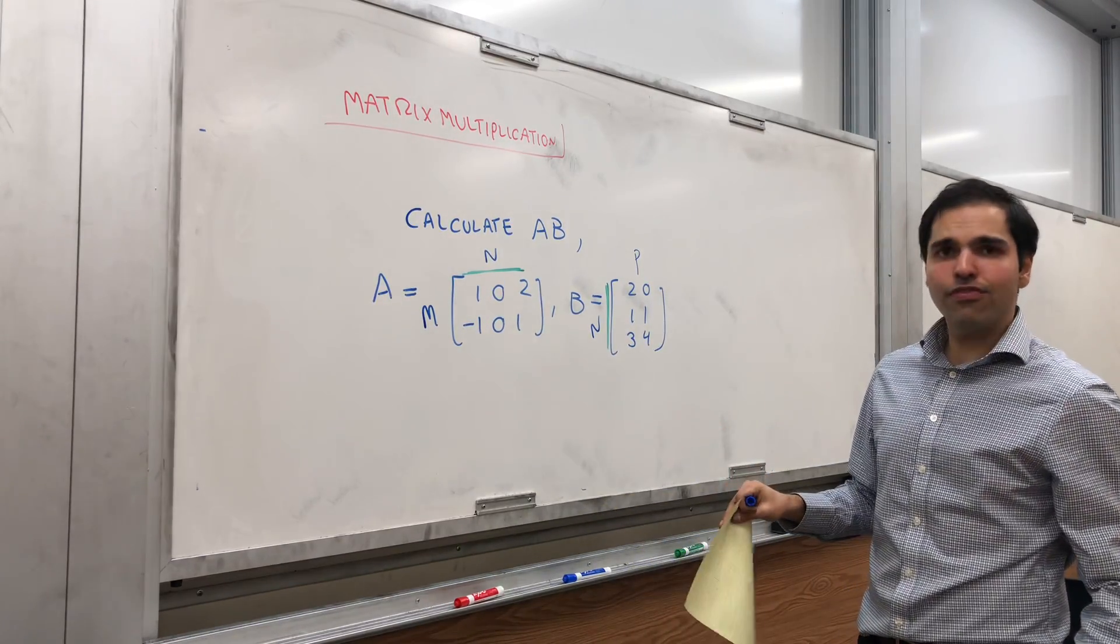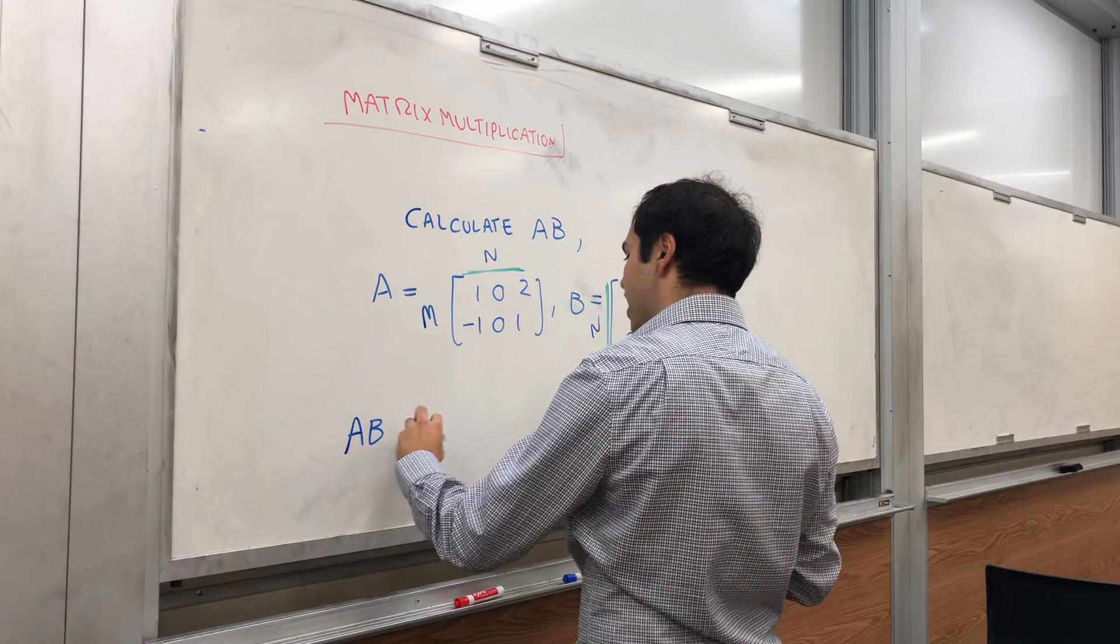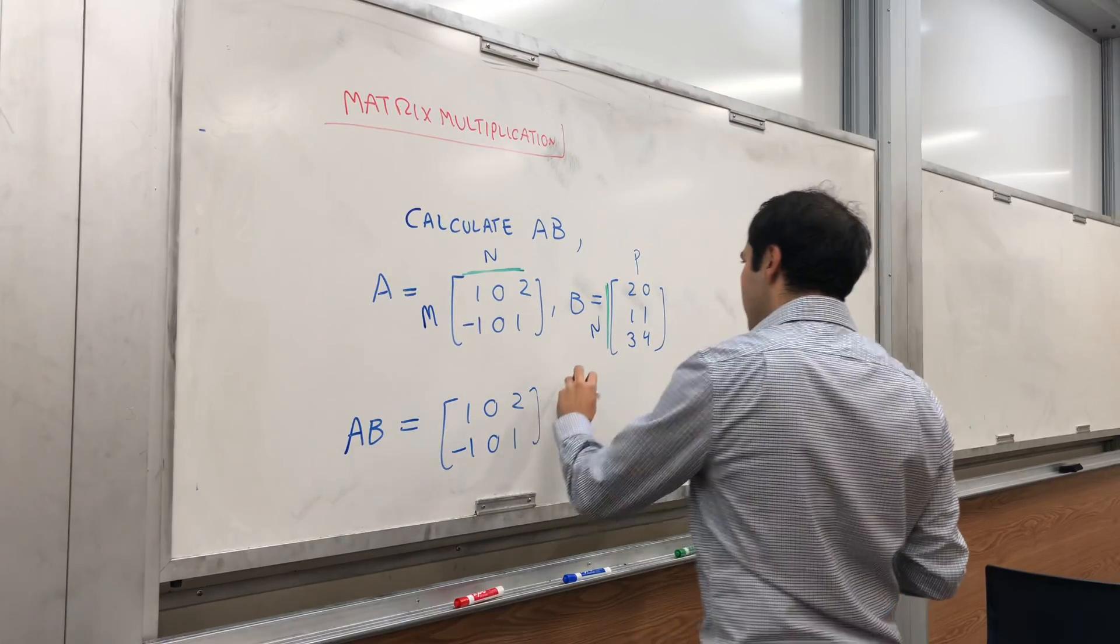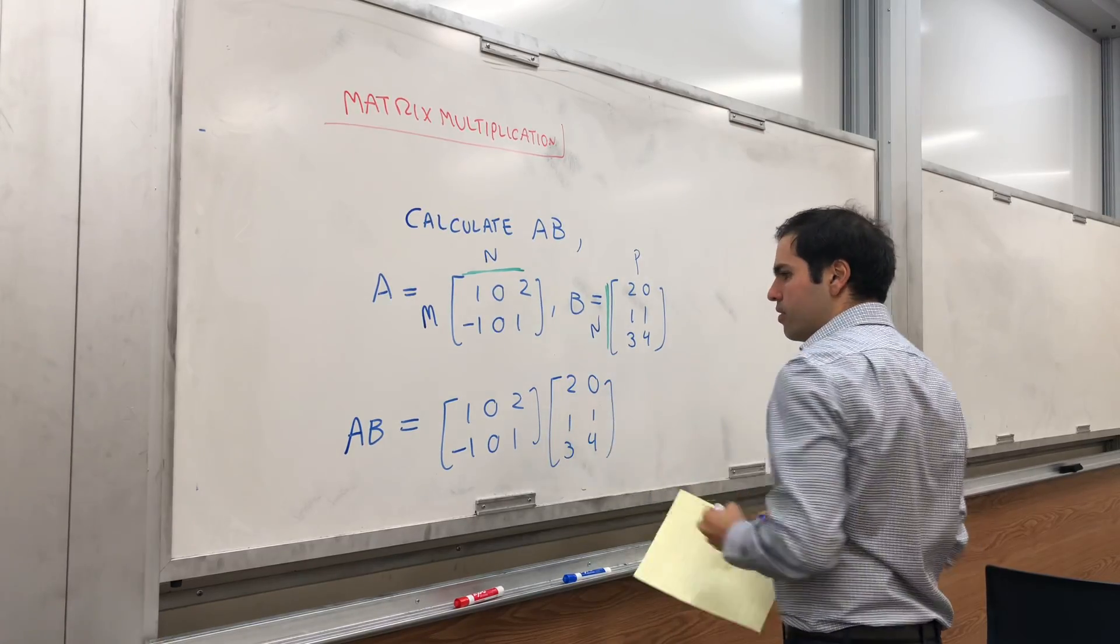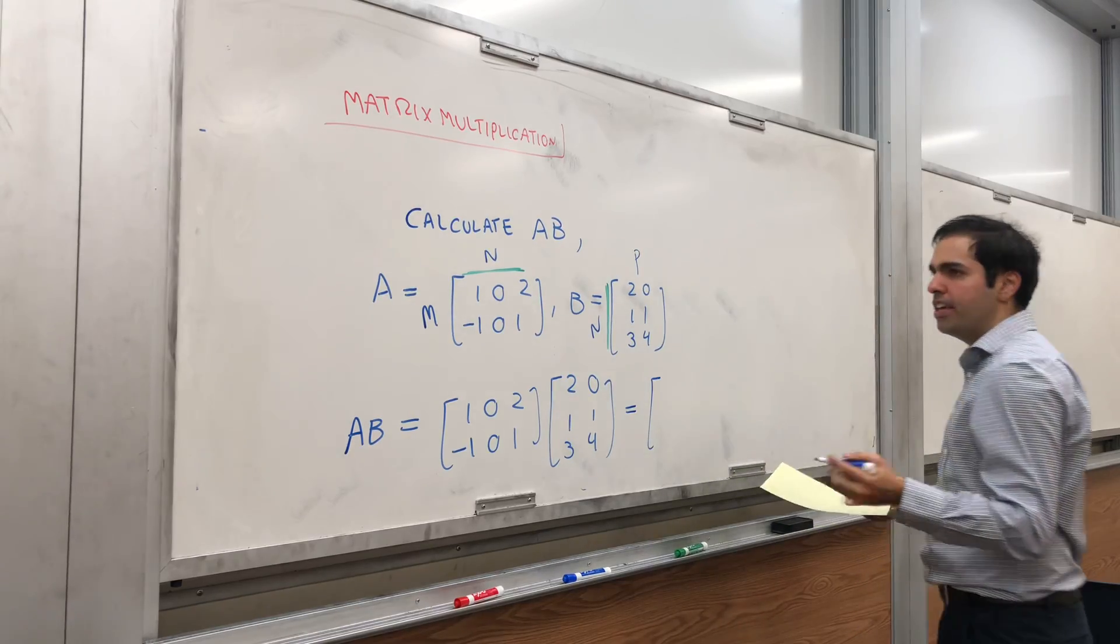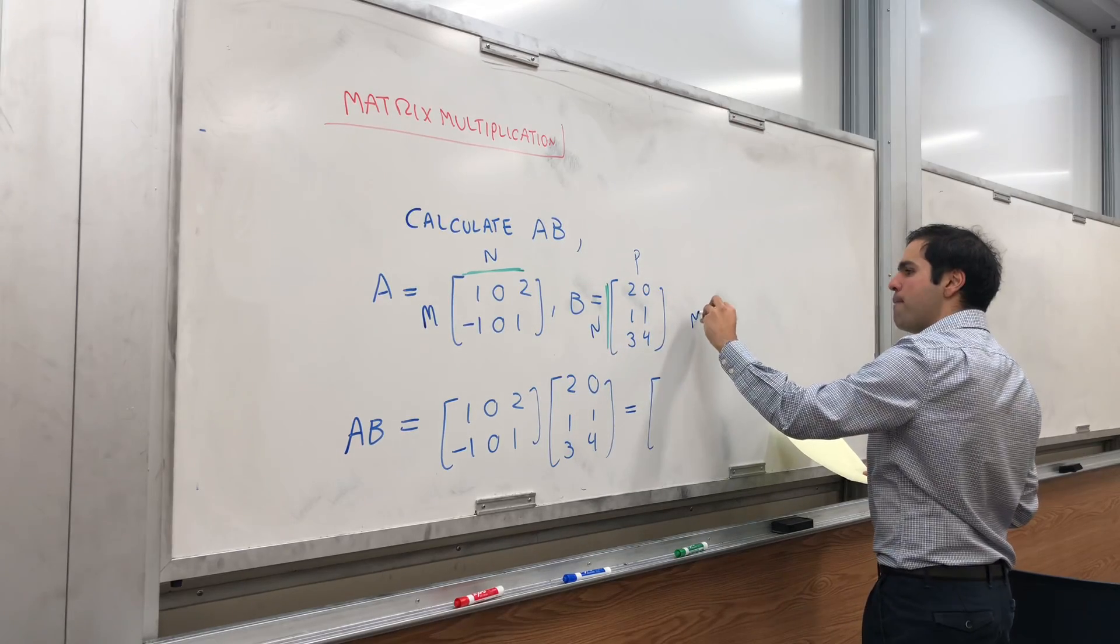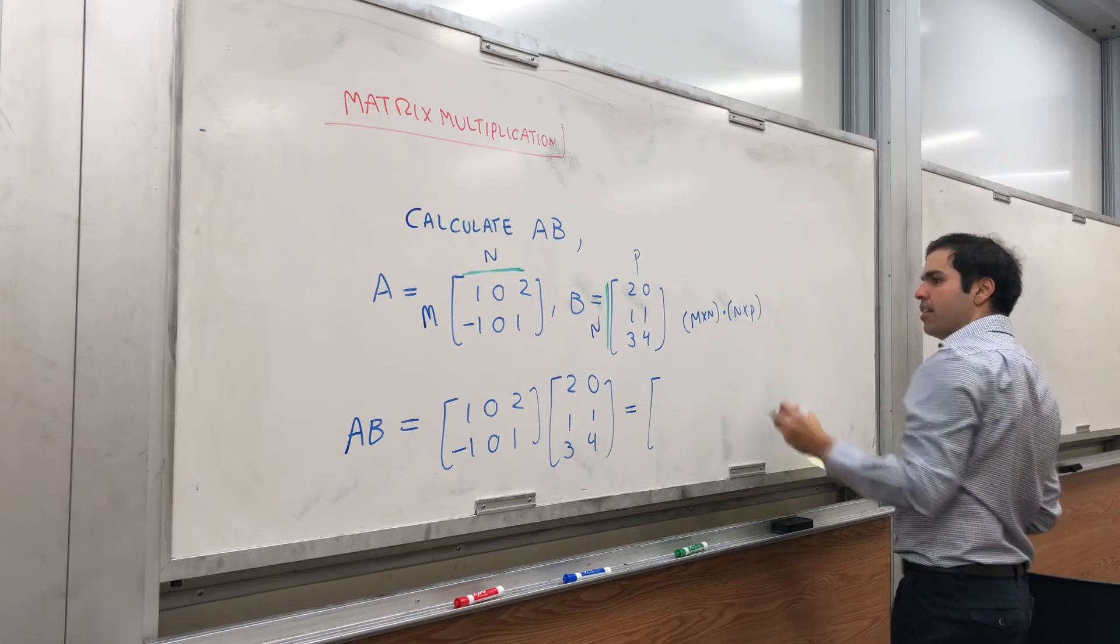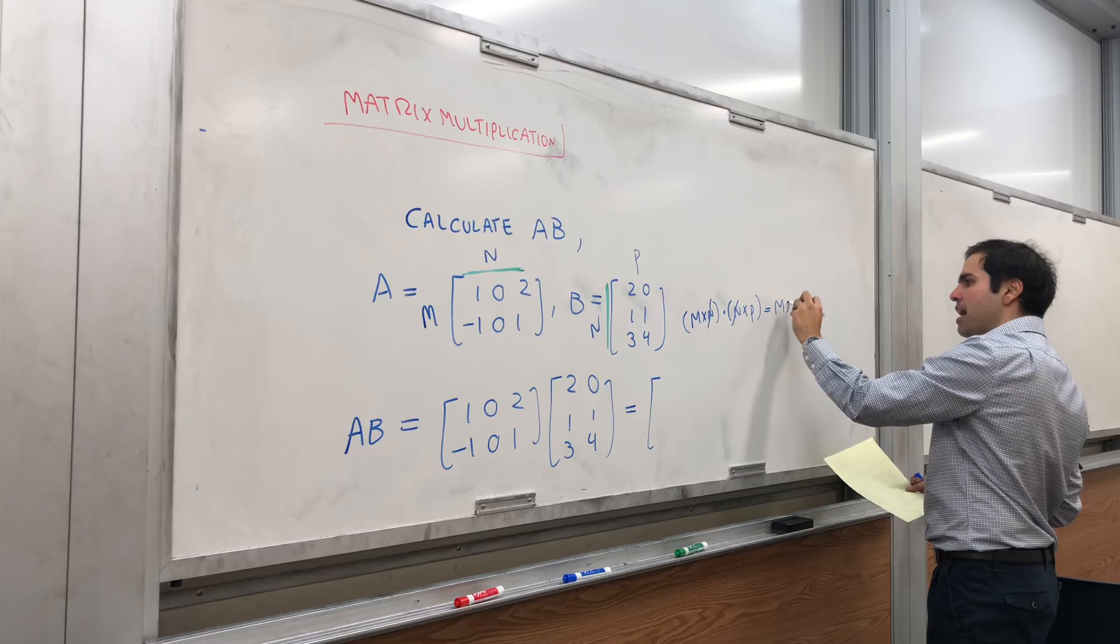All right, that's first of all. Second of all, let's figure out the size of AB. So AB in this case is 1 0 2, -1 0 1 times 2 1 3, 0 1 4. The question is what is the size of the matrix AB? Well it turns out there's a nice mnemonic. So if A is n by n and B is n by p then all you need to do is cancel out the n and you get m by p.